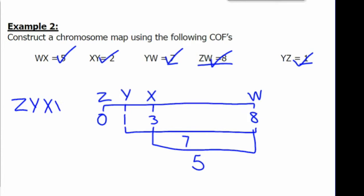So the order of the genes on this chromosome are Z, Y, X, W, or W, X, Y, Z.